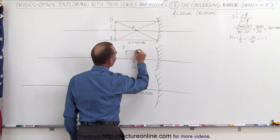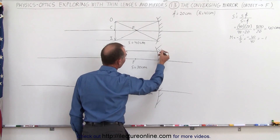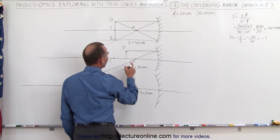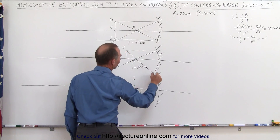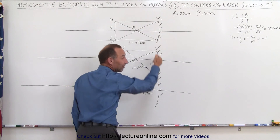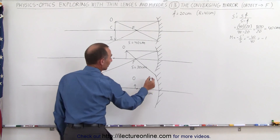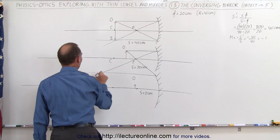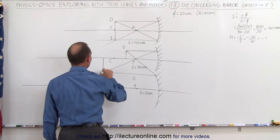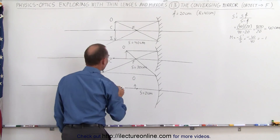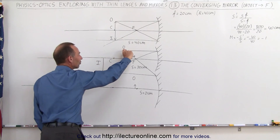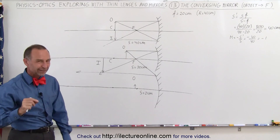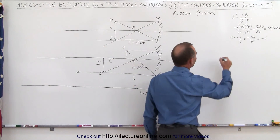We draw the first ray from the top of the object to the mirror — it reflects off the mirror through the focal point. The second ray is drawn through the focal point until it hits the mirror. Sometimes you have to make the mirror a little bit bigger. Then it reflects off the mirror parallel to the optical axis. Where the two rays meet is where you'll see the image. Notice the image looks bigger than the original object, and it's also farther away from the lens and from the focal point.